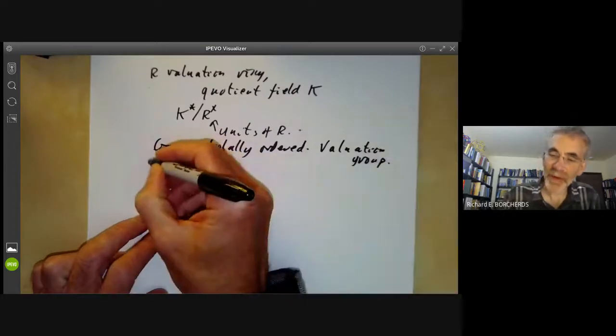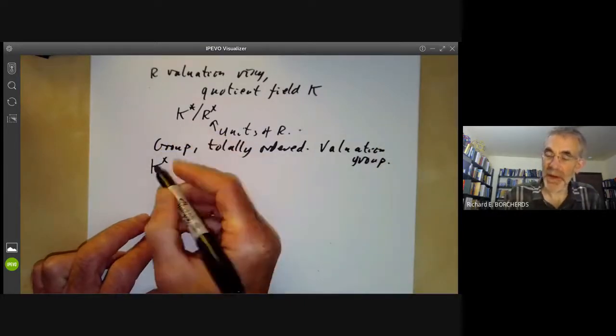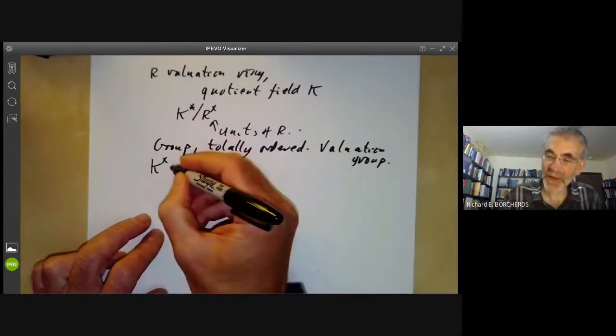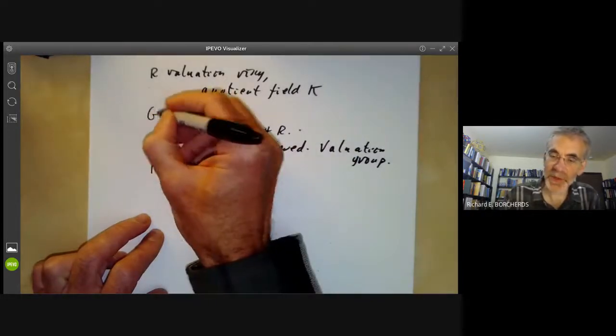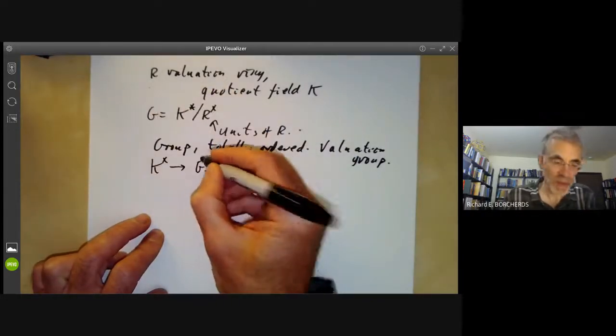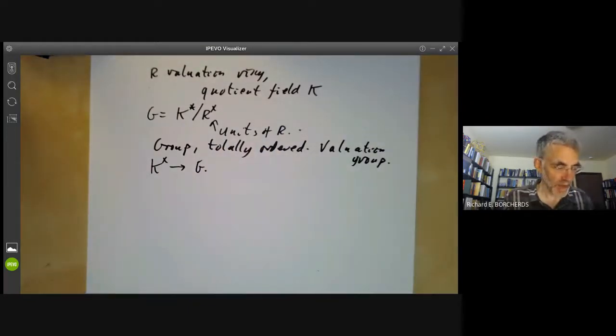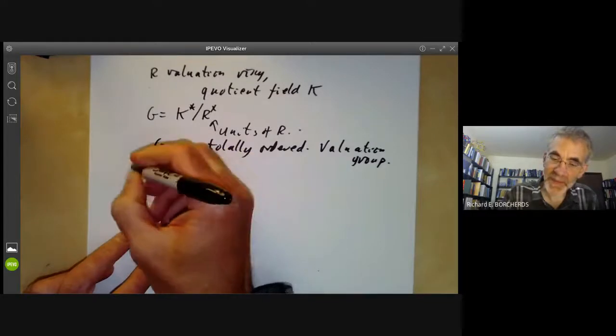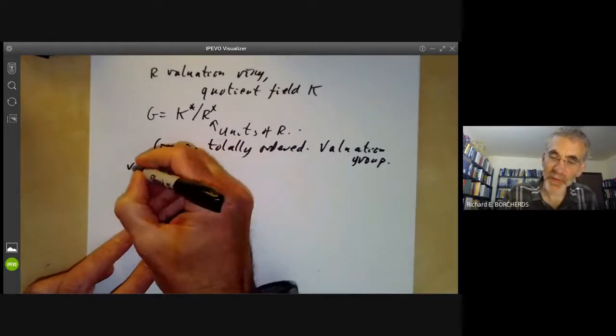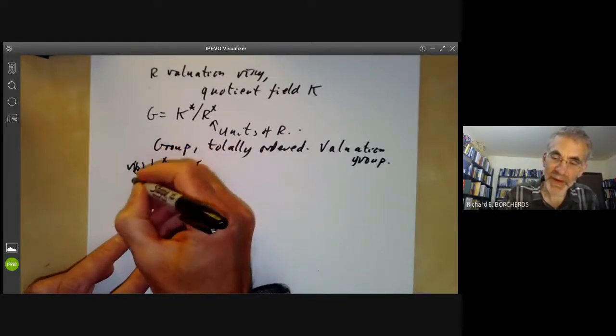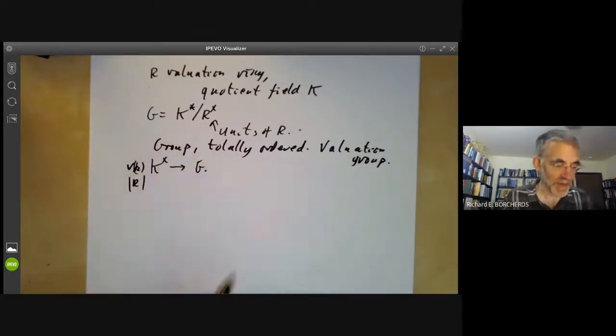And it's called the valuation group. And we have a map from the non-zero elements of K to this group G. Let's call it G. And this map is denoted either by V or by V of K or by the absolute value of K.